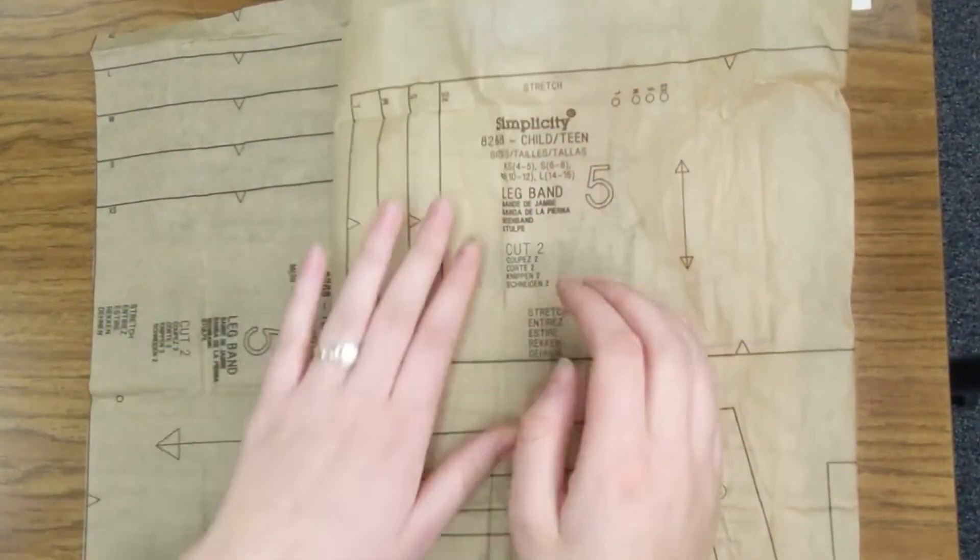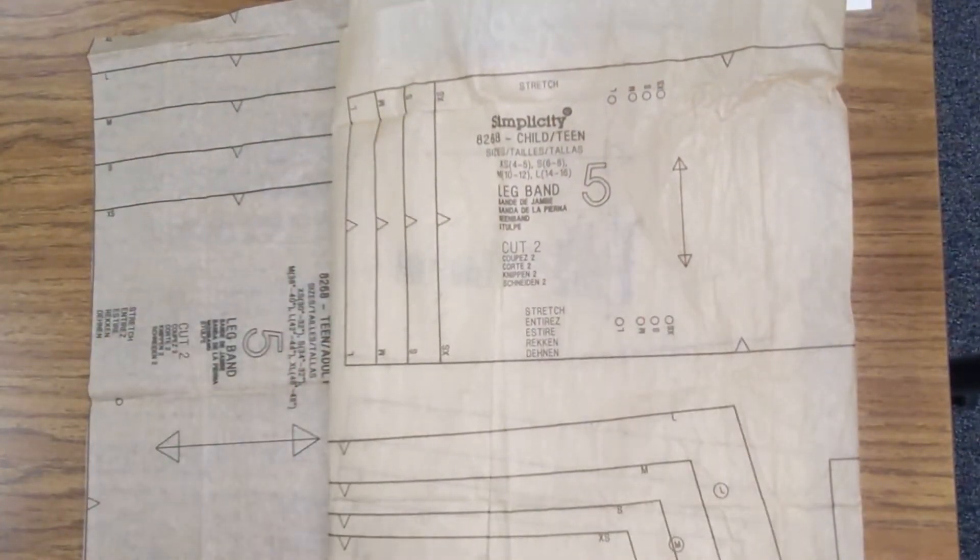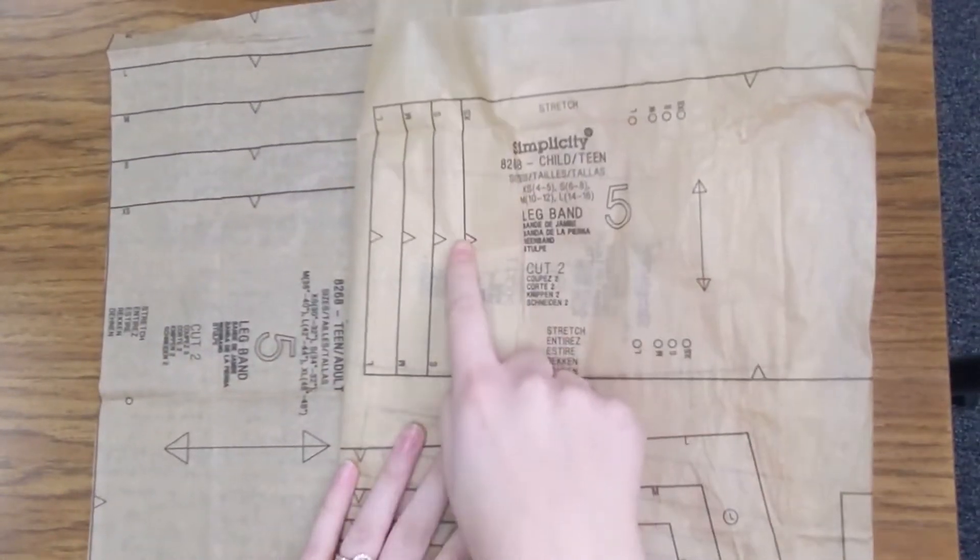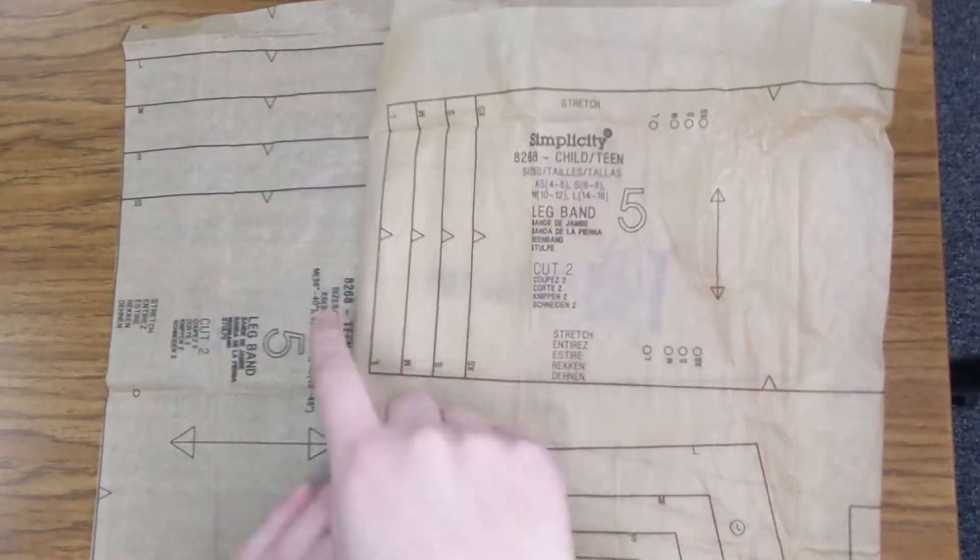It's kind of just this brown, really light paper. It's so thin that you can actually use fabric scissors on it, which is kind of nice. And you'll see it has different sizes: extra small, small, medium, large.